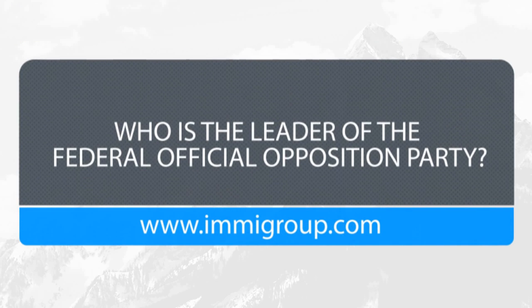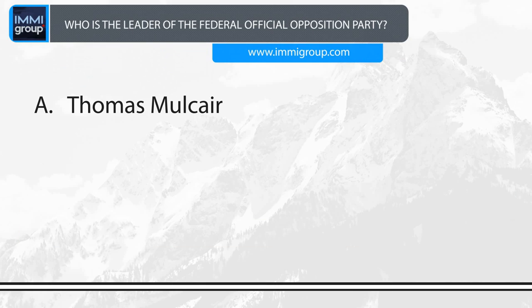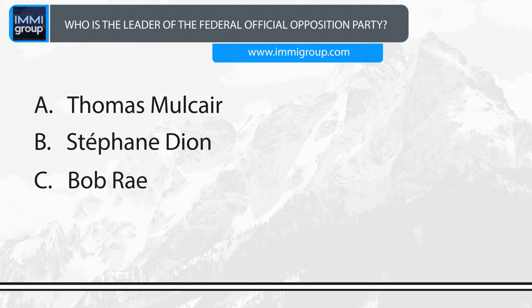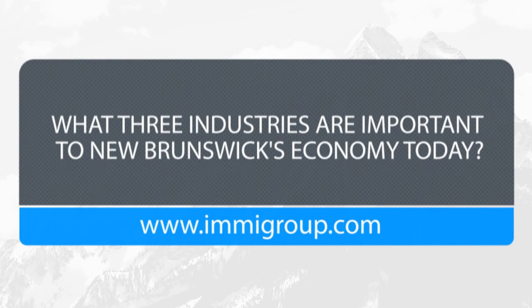Who is the leader of the Federal Official Opposition Party? A. Thomas Mulcair. B. Stephen Dion. C. Bob Ray. D. Adrian Dix. Answer: Thomas Mulcair.